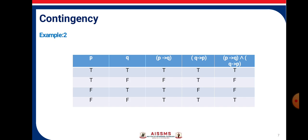Consider the next example for contingency. P has truth values T, T, F, F and Q has truth values T, F, T, F. P implies Q gives T, F, T, T. Q implies P gives T, T, F, T. When we do the AND operation of (P implies Q) and (Q implies P), we get T, F, F, T. As we see, we get the truth values as T as well as F, so it is contingency.